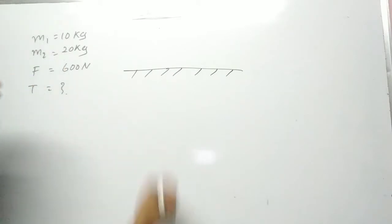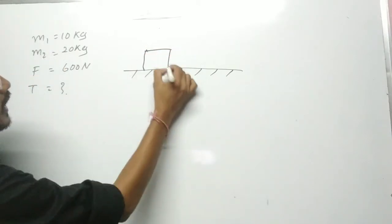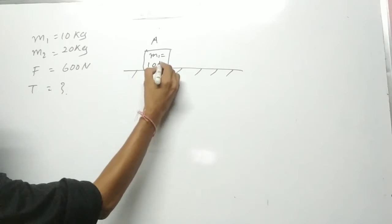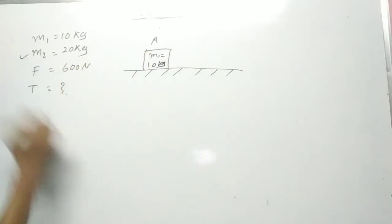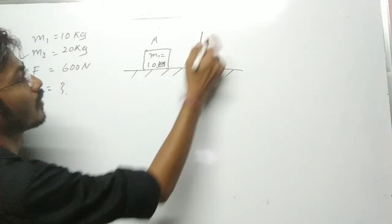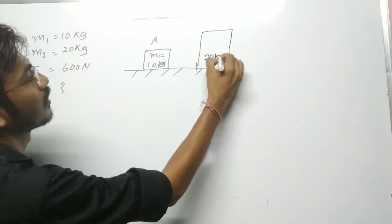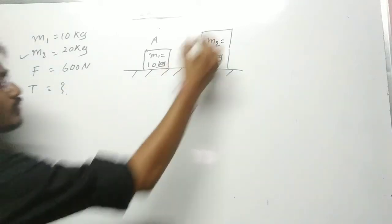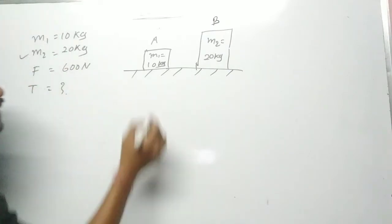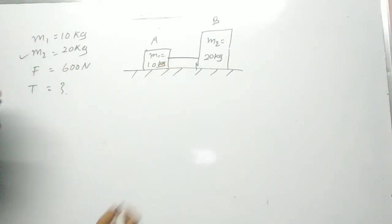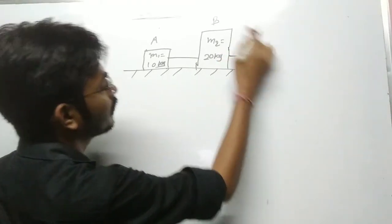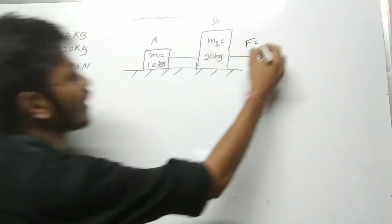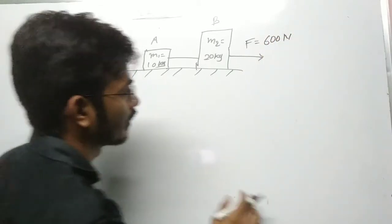Now let us consider the figure configuration. Suppose yeh hamaari smooth horizontal surface hai. Let assume that yeh hamaara A hai and yeh hamaara m1 hai. m1 ki value 10 kg hai, m2 ki value 20 kg hai. In dono ko string se connect karna hai, and let assume that at point B, force F = 600 Newton is applied for Case number one.